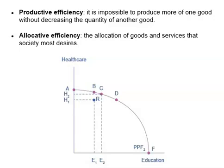Productive efficiency means it is impossible to produce more of one good without decreasing the quantity of another good. All choices along a given PPF — like point B, C, or D — display productive efficiency, but point R does not. Point R is inside the PPF curve. That means not all resources are being used, and at point R it is possible to produce more healthcare or education, or both, without decreasing the quantity of any of them.